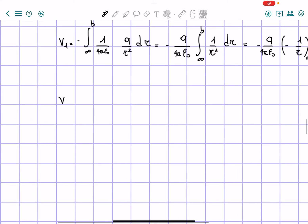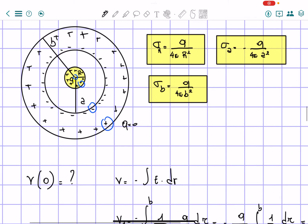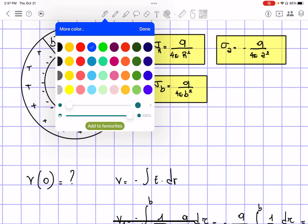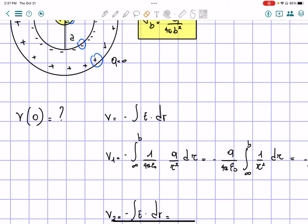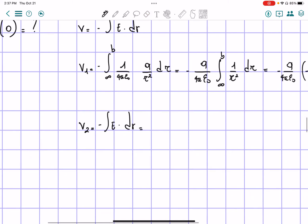The second one will be negative electric field times dr. And now let's look at the figure we have again. Now inside the a and b, let me color it so it's easier to see it. We actually do not have any charge. So our electric field is actually equals to 0.